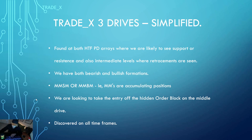We're going to go through this. I'm going to show you examples but we are looking to take an entry off the hidden order block which is inside the middle drive of the three drive. These are discovered on all time frames. As we know price is fractal so we're going to find them on the one minute, five minute, ten minute - one hourly, daily.